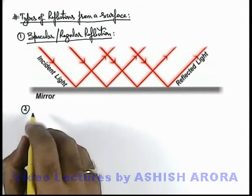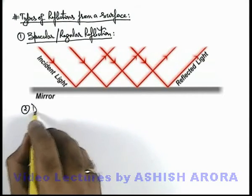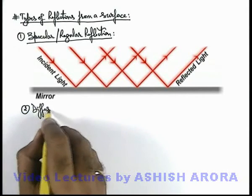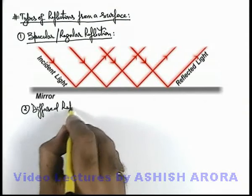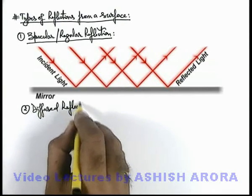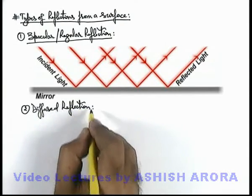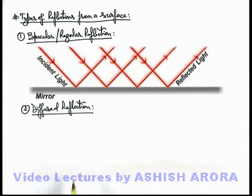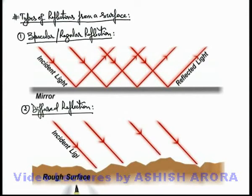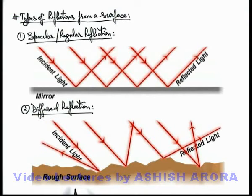The second phenomenon is diffuse reflection. Diffuse reflection generally takes place from a rough surface. Here you can see, if this is the rough surface on which a light beam is incident, then all the light rays in the beam are reflected in different directions.